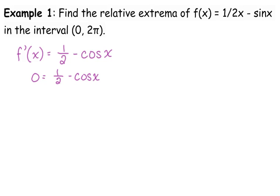So in this case, usually we don't move the variable, but it's negative and the other number is not. So I'm going to add the cosine to both sides. Cosine of x is equal to one-half. Now these are traditionally calculator inactive questions, so you do need to be able to reference the unit circle in your mind. Where is the cosine equal to one-half? Pi over three.